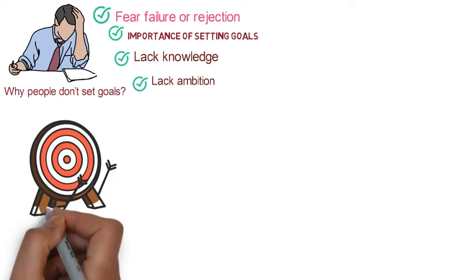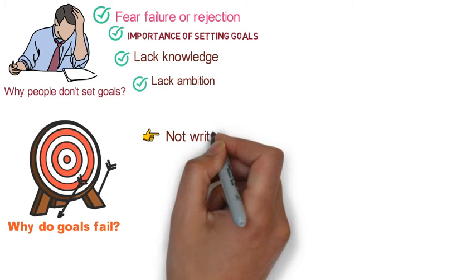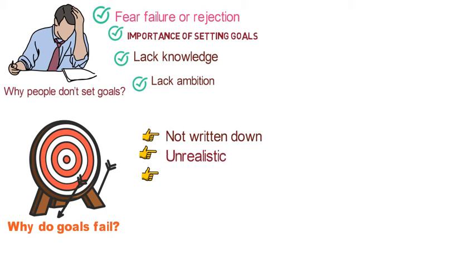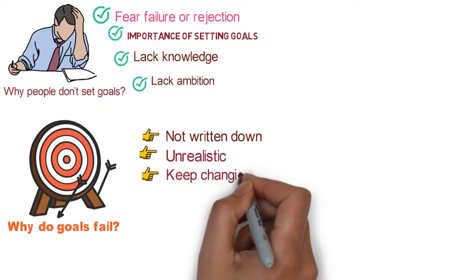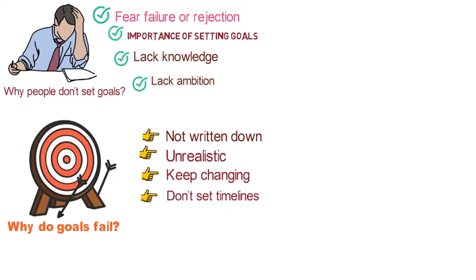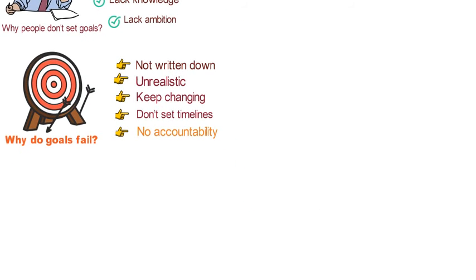Why do goals fail? Among the most common reasons why goals fail today is because they are not written down, or we set unrealistic goals. Another reason could be that we keep changing our goals with time, or we don't set timelines for our goals. Most importantly, there is no accountability when setting certain goals, and so we don't even know when we achieve them.